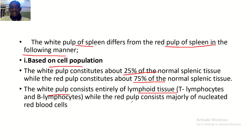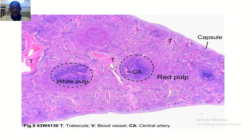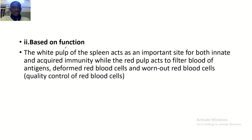The white pulp consists entirely of lymphoid tissue — that is, T lymphocytes and B lymphocytes — while the red pulp consists majorly of nucleated red blood cells. Here is the real histological slide where you can see the white pulp and the red pulp.